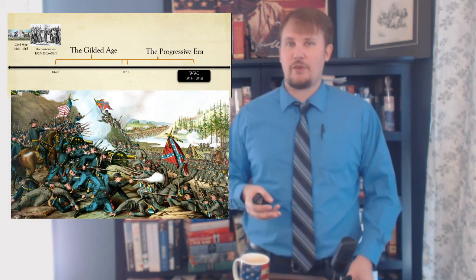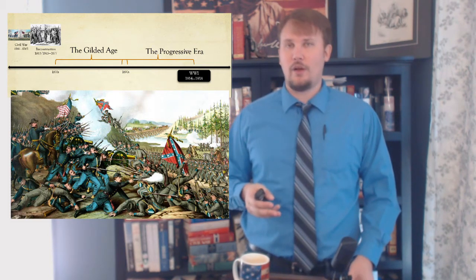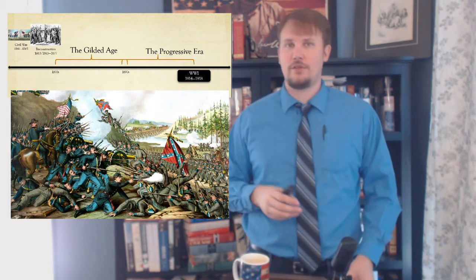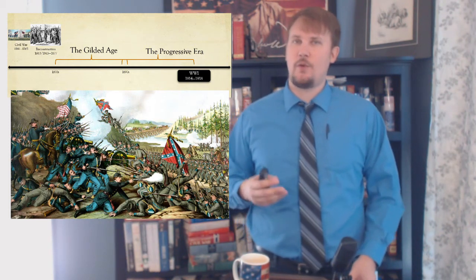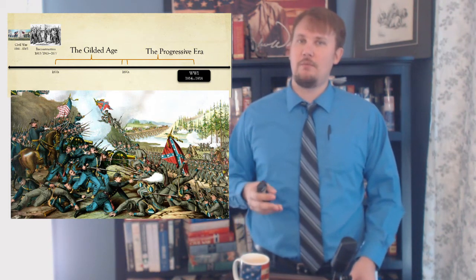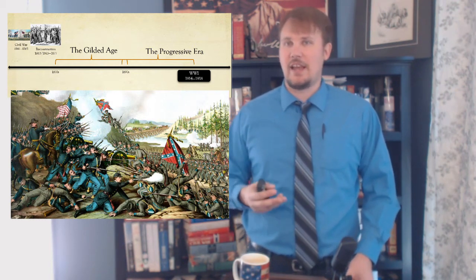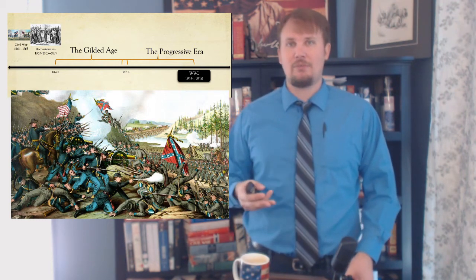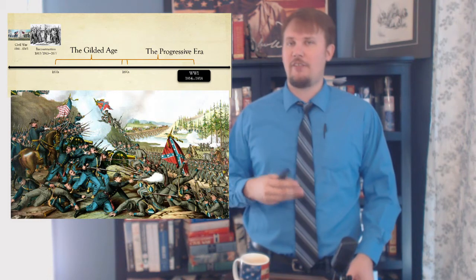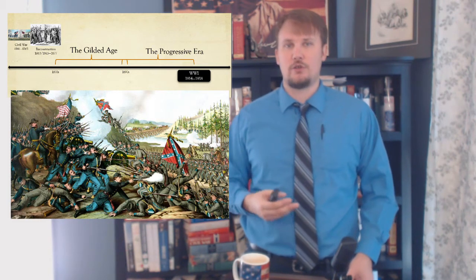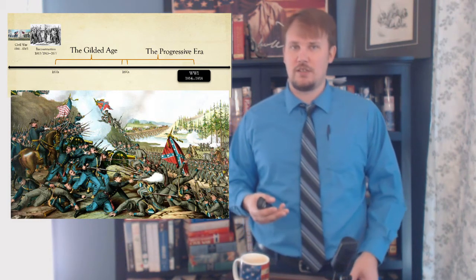The end of slavery wiped out $2 billion in wealth in slaves in the southern states. The 13th, 14th, and 15th Amendments — known as the Civil War Amendments — ended slavery, made black people citizens of the United States, and gave black men the right to vote. These amendments changed American social customs and institutions.